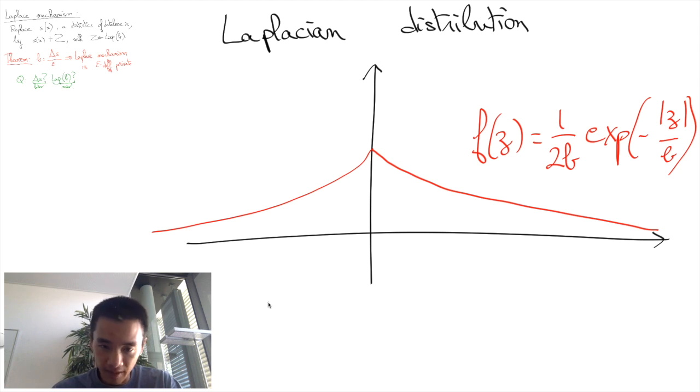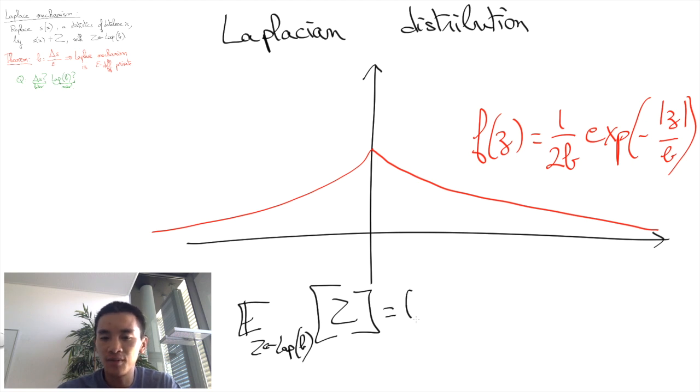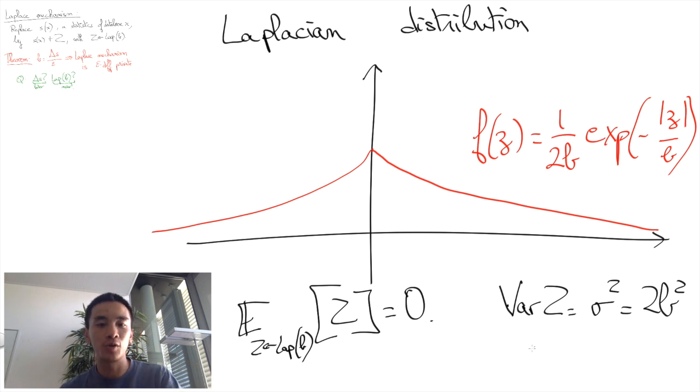What's important to keep in mind is that first, this curve is perfectly centered around zero, so that in expectation, the Laplace mechanism yields the right result. Also, the variance of the distribution can easily be derived from the parameter B, as we have sigma squared equals to 2B squared. In other words, B is of the same order of magnitude as the standard deviation of the distribution.